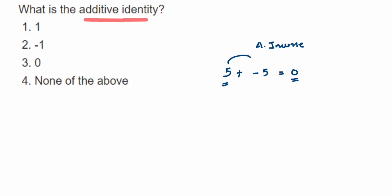So zero will be the additive identity. So here in these four options, 3 is the answer—option 3, which is zero. This is important to understand what is additive identity because you're going to have questions on this topic.